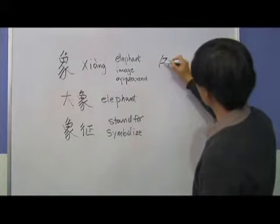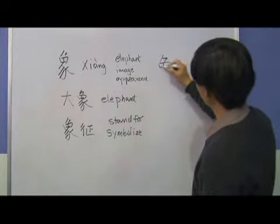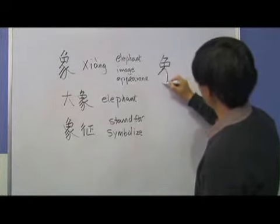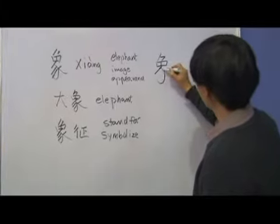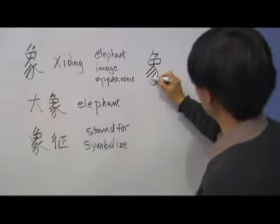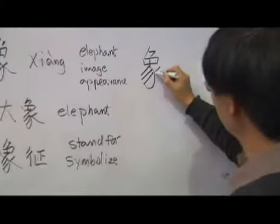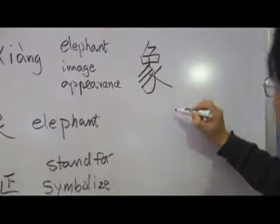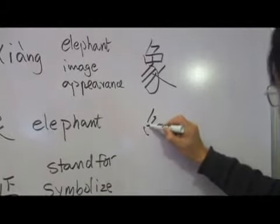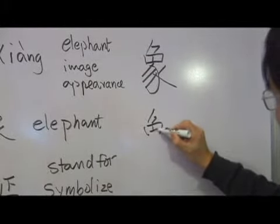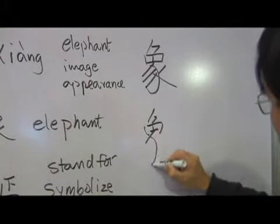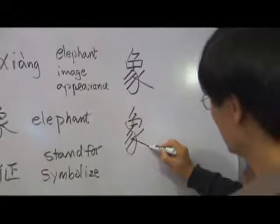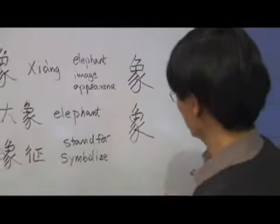The stroke order for xiang: 撇, 彎, 勾, 撇, 撇, 撇. And 向 (xiàng).